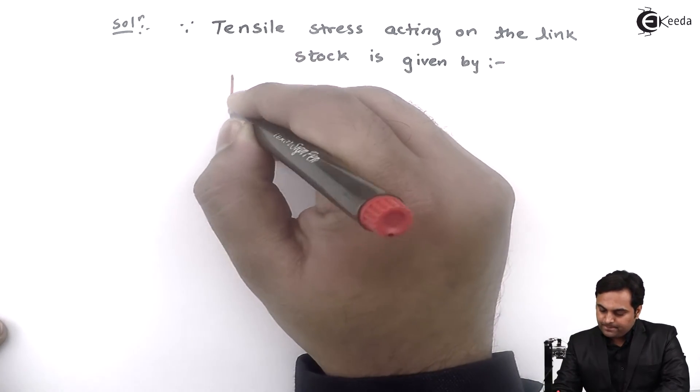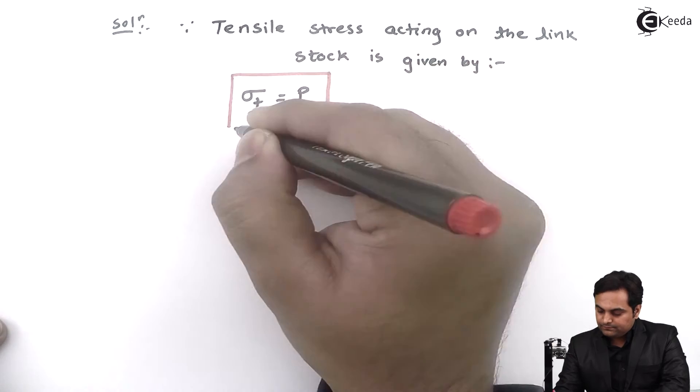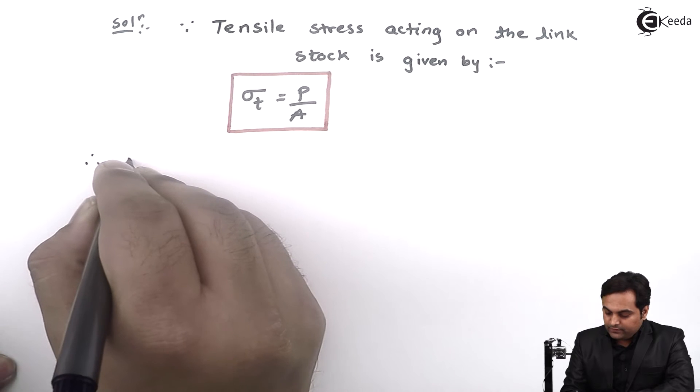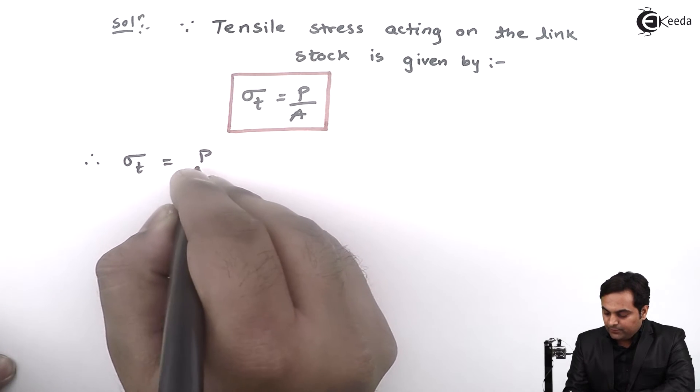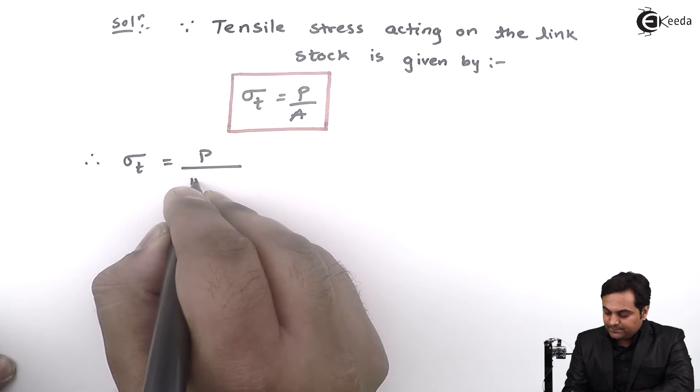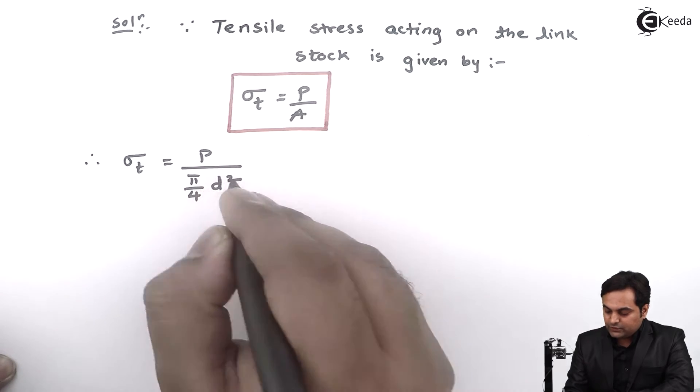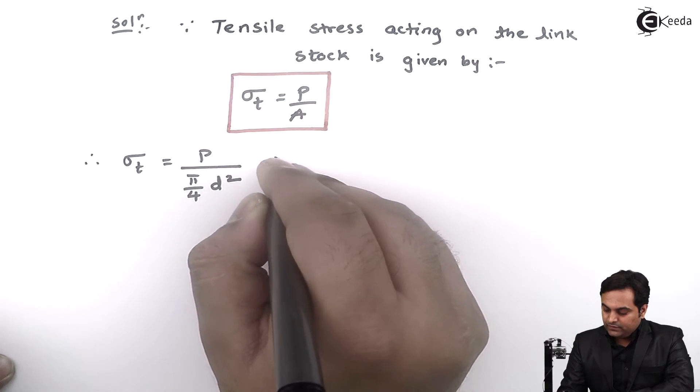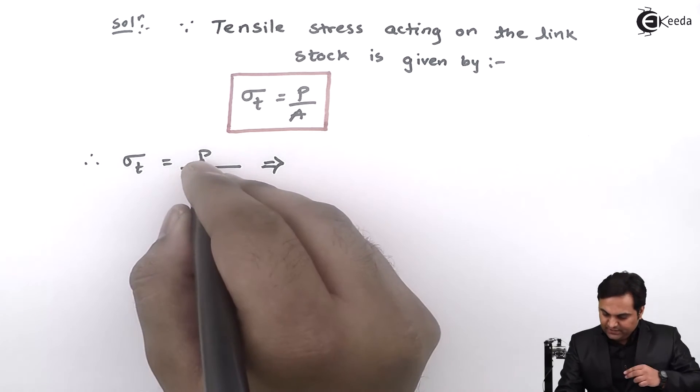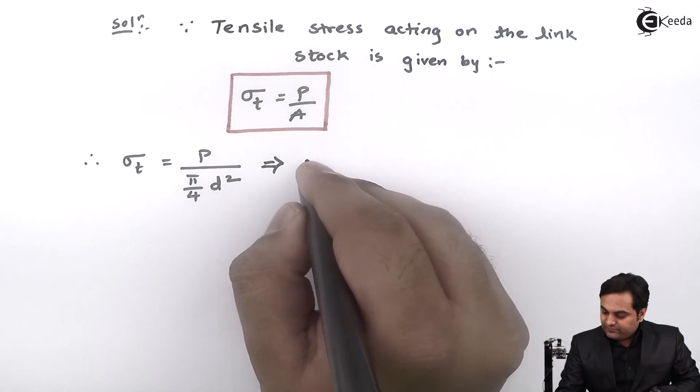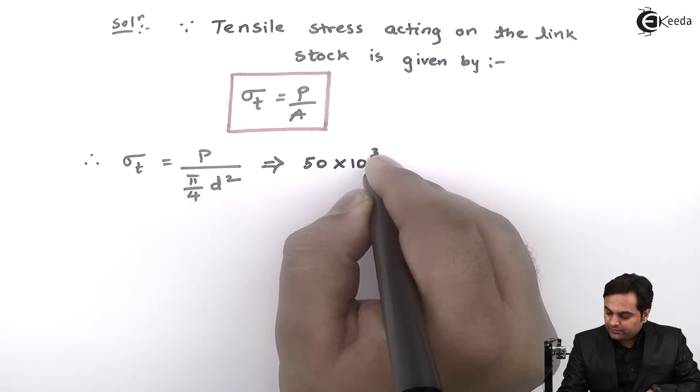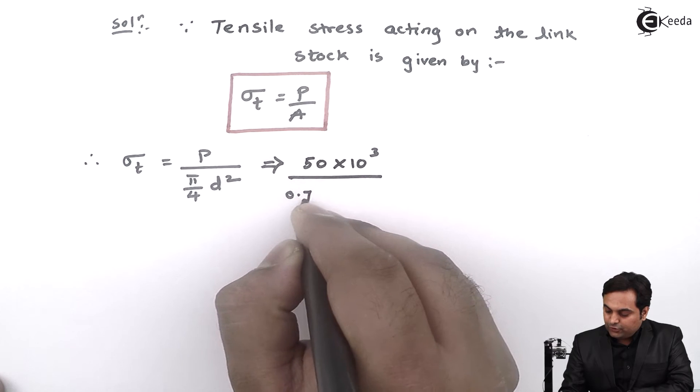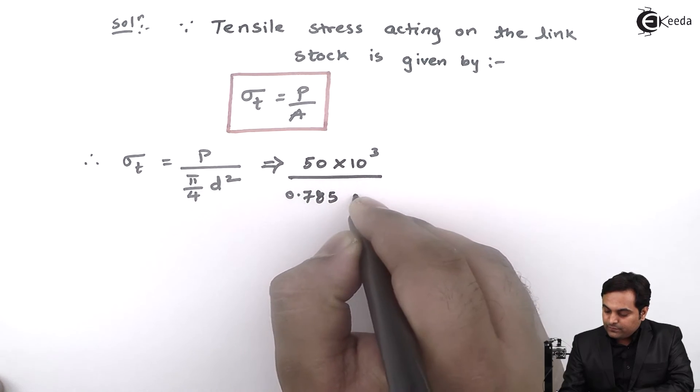Since tensile stress is load upon area, σT = P/(πd²/4). Here P is 50×10³ N, so σT = 50×10³/(0.785d²).